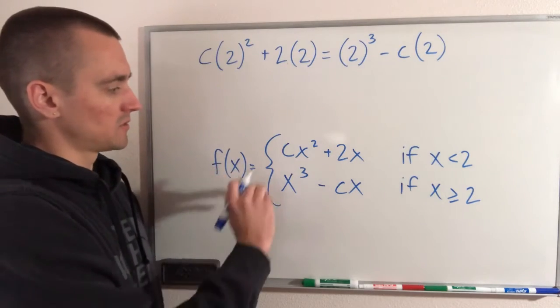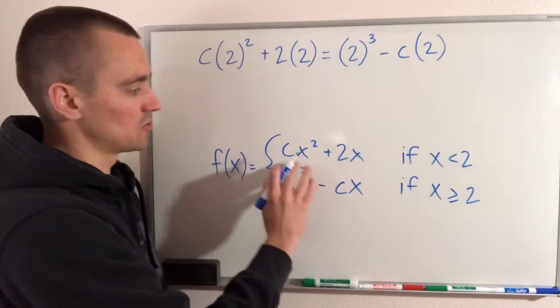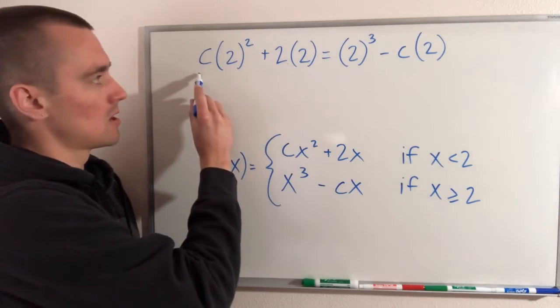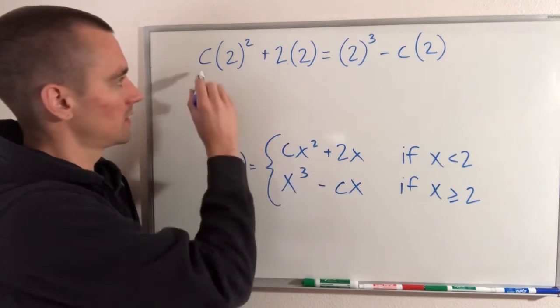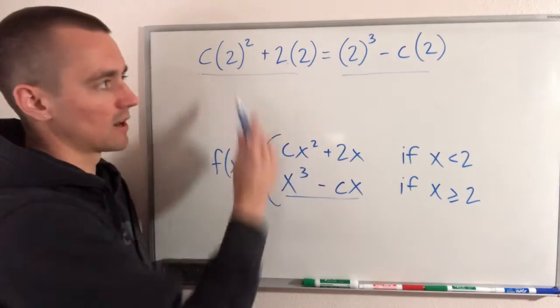So here is our piecewise function f. All we did was take 2, put it in for x into each of these functions, and then set them equal to each other. So this is our upper piece here, and then our lower piece is here. And all we did was replace our x with 2.